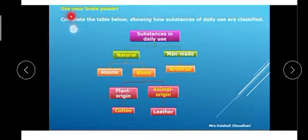Complete the table below showing how substances in daily use are classified. Substances in daily use - there are two types: natural and man-made. In man-made, there is one type which is artificial. In natural substances, there are two types: first is abiotic and second is biotic. In biotic, there are two types - plant origin and animal origin. Plant origin example is cotton, and animal origin example is leather.